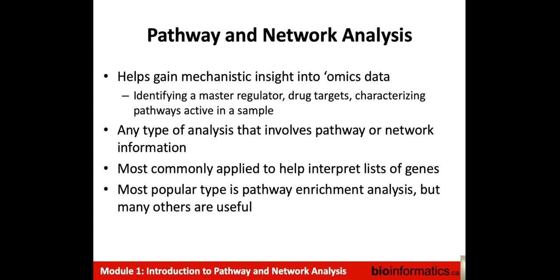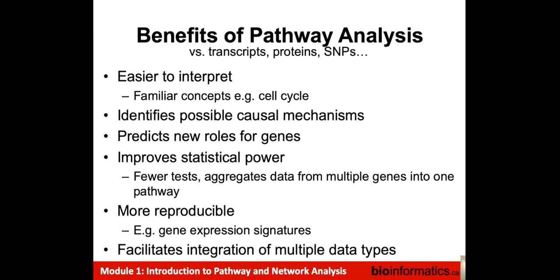Any type of analysis that involves pathway or network information is a type of pathway or network analysis. It is most commonly applied to help interpret lists of genes, and the most popular type is pathway enrichment analysis. The benefits compared to analyzing information at the transcript or protein level one by one include: it makes data easier to interpret using familiar concepts like the cell cycle, it identifies possible causal mechanisms useful for therapeutically targeting those mechanisms, and it can improve statistical power.